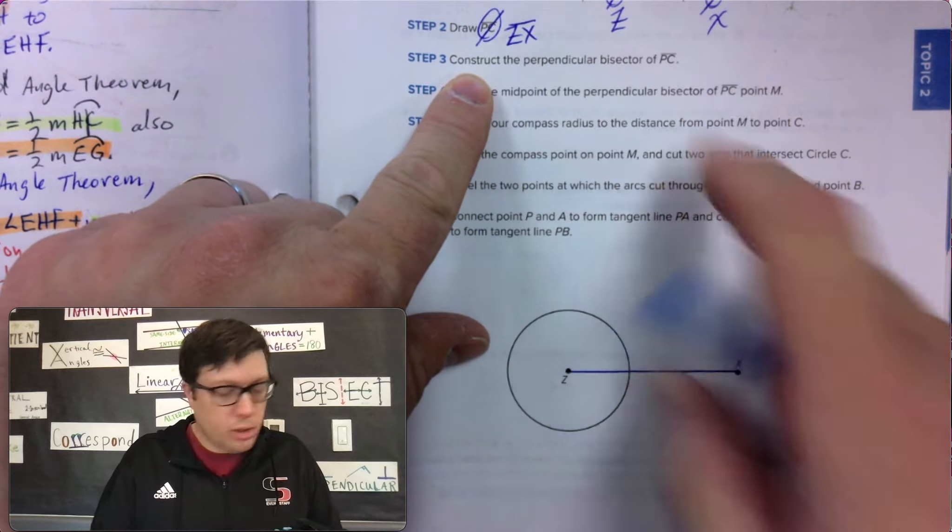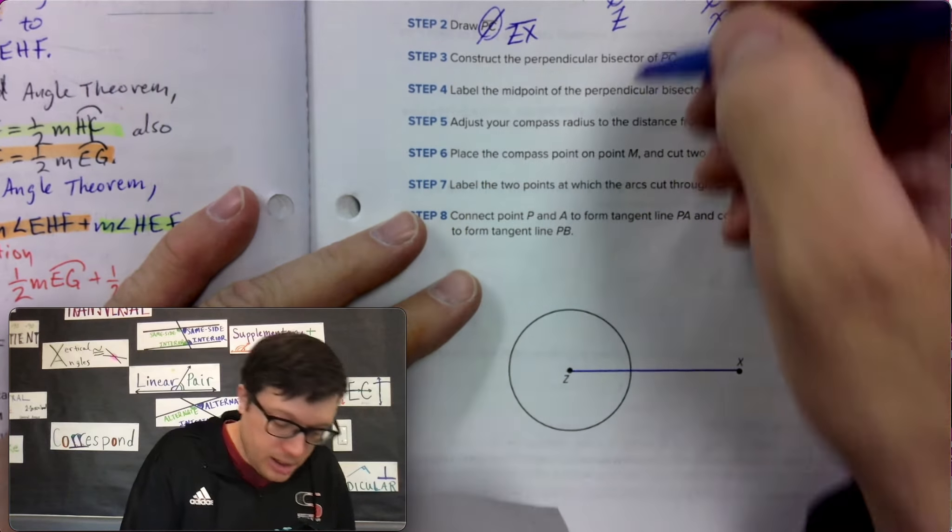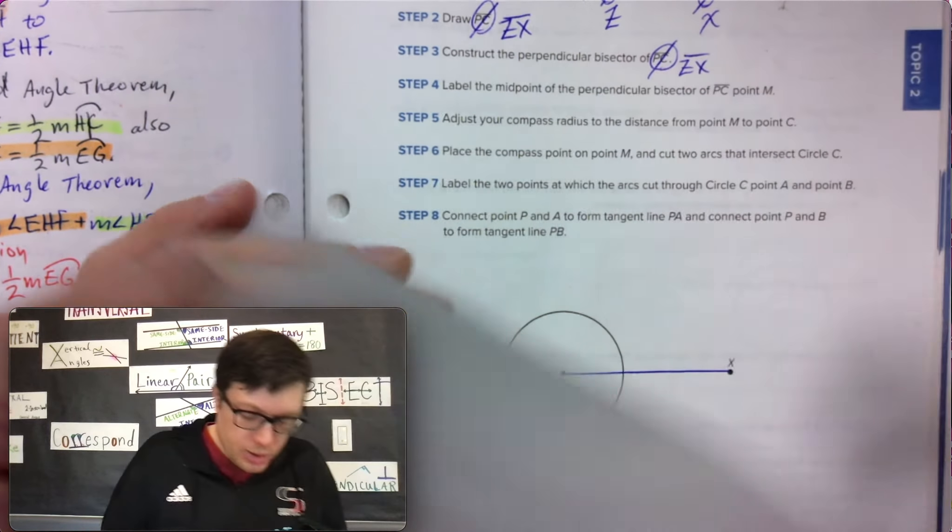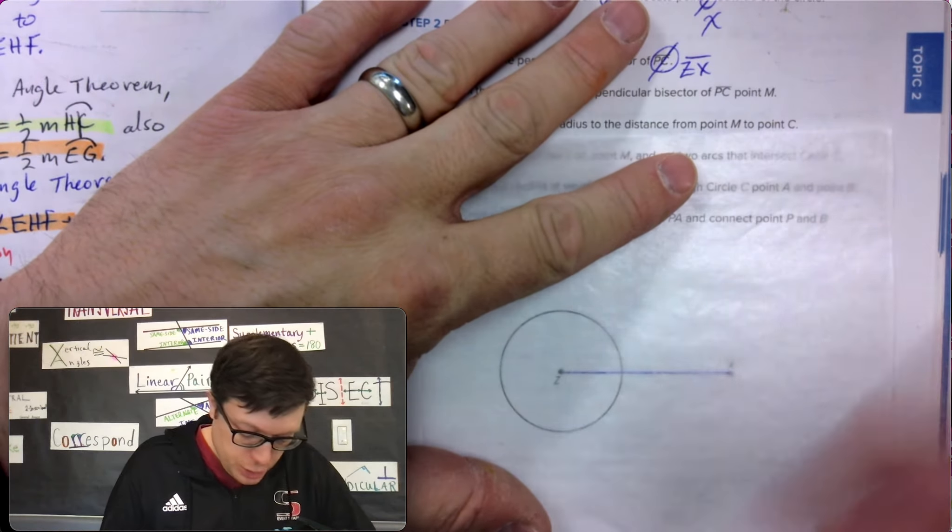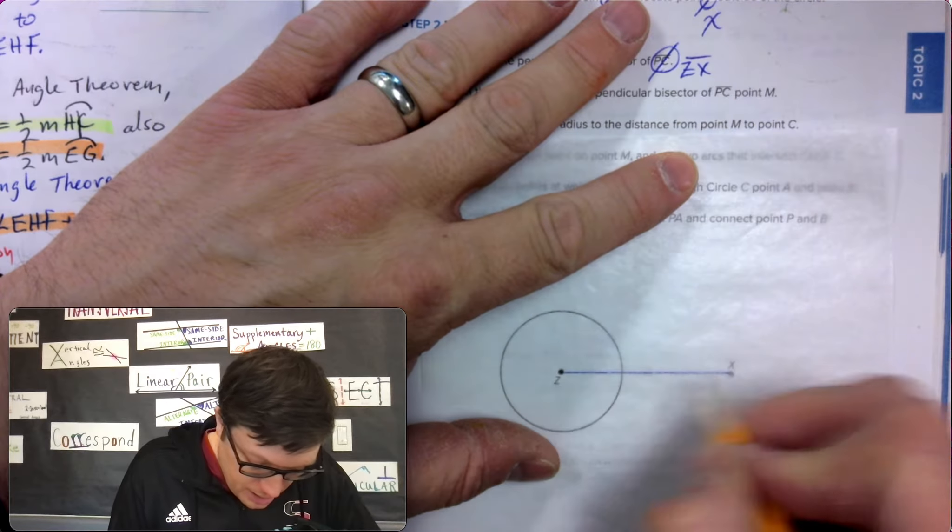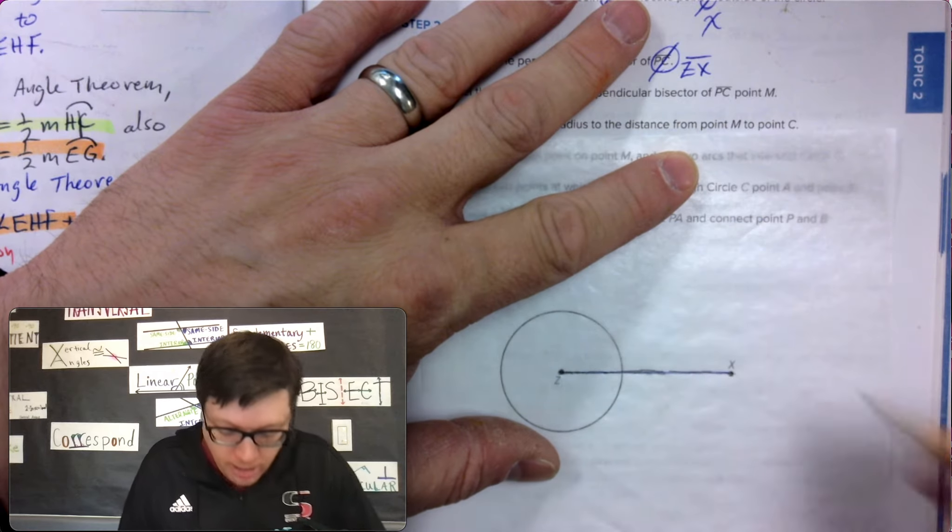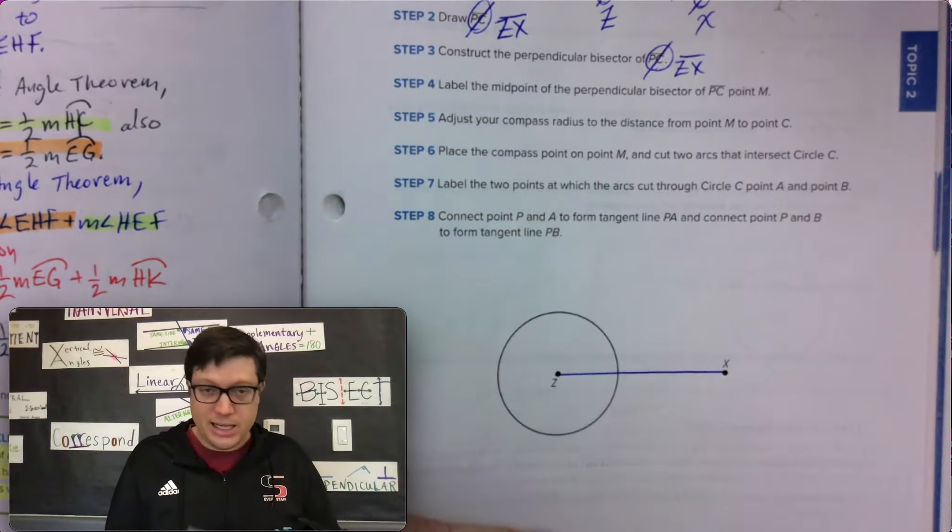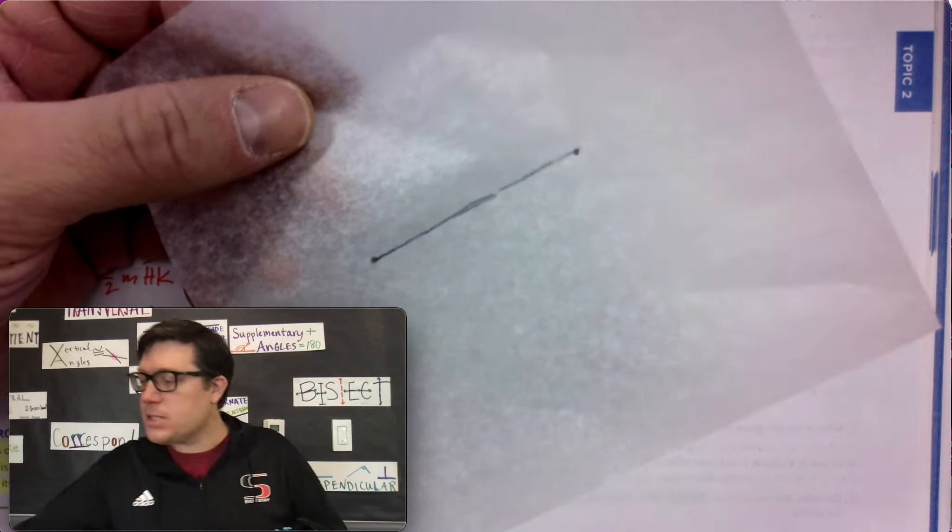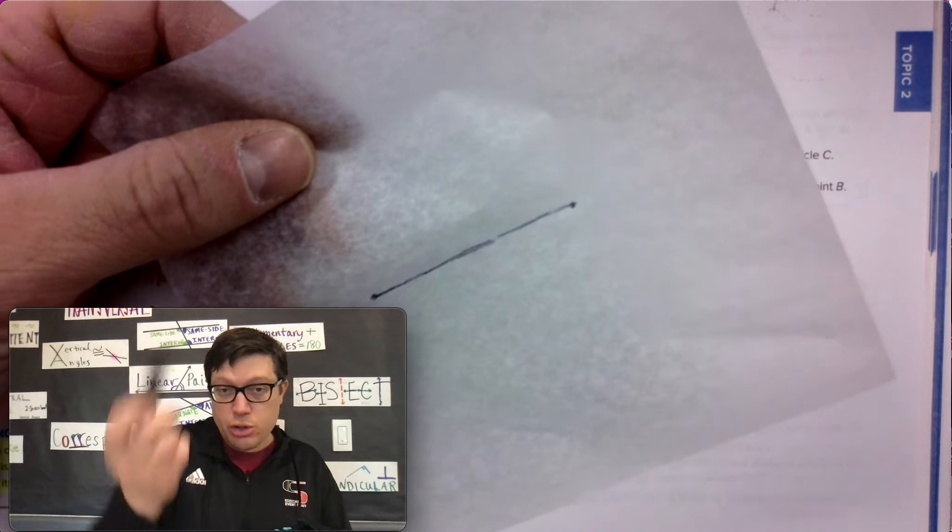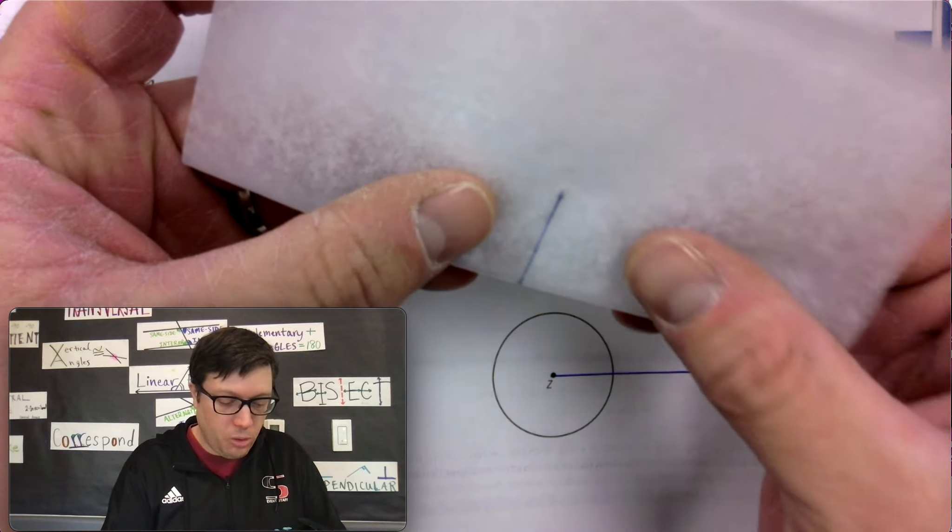Construct the perpendicular bisector of PC. Now that's not PC anymore. Remember changing the letters to ZX. So to do that, use the tracing paper. Trace Z and X, kind of trace the segment, although the segment's not the important part. Make sure you have ZX specifically dotted on the tracing paper. And then there is something you could do with like a compass and you could draw two circles that are the same size that overlap and that would work.